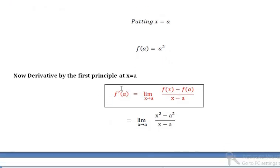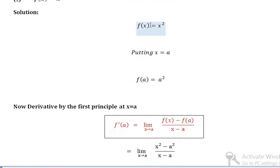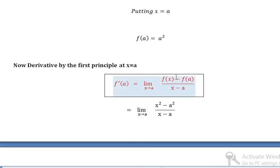According to the derivative by first principles, f dash of a is equal to the limit as x tends to a of f of x minus f of a, divided by x minus a. We know that f of x is equal to x squared.